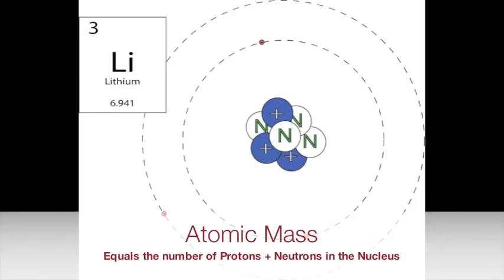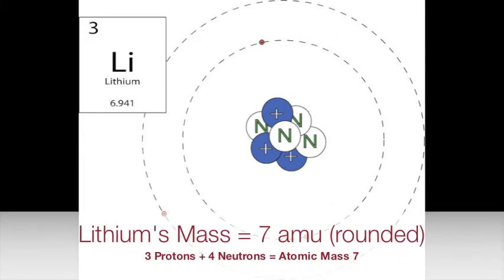Atomic mass is equal to the number of protons plus the number of neutrons in the nucleus. Lithium has an atomic mass of seven AMU rounded. That means three protons plus four neutrons equals an atomic mass of seven.